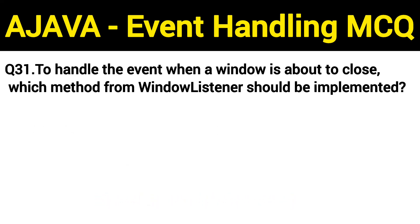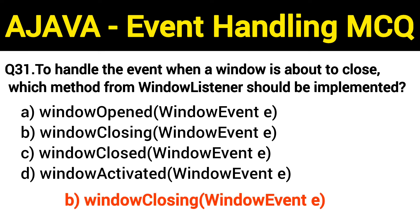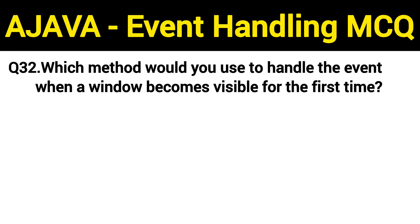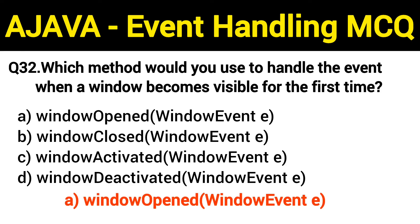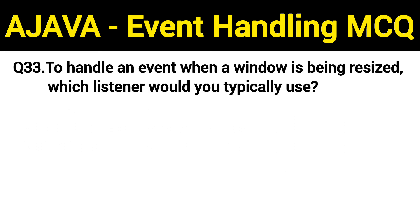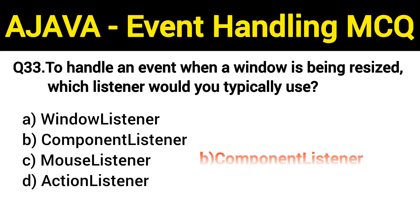Question number 31: to handle the event when a window is about to close, which method from WindowListener should be implemented? The right answer is option B: windowClosing() method. Question number 32: which method would you use to handle the event when a window becomes visible for the first time? The right answer is option A: windowOpened() method. Question number 33: to handle an event when a window is being resized, which listener would you typically use? The right answer is option B: ComponentListener.